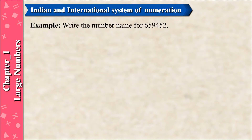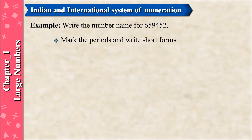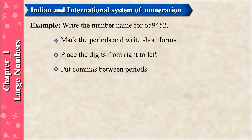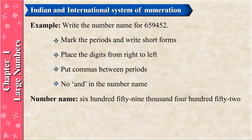Example: Write the number name for 659452. Mark the periods and write short forms. Place the digits from right to left. Put commas between periods. There is no 'and' in the number name. Number name: 659452.